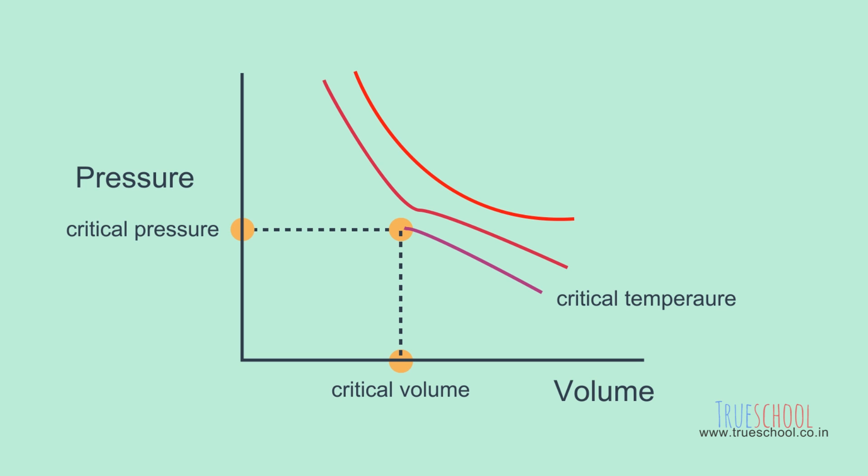At higher temperature the gases do not condense no matter how high a pressure we apply. At critical temperature the gas condenses at critical pressure and remains liquid even if we increase pressure, but there is very slight change in volume after this point and the curve gets very steep because it is difficult to compress a liquid compared to a gas.